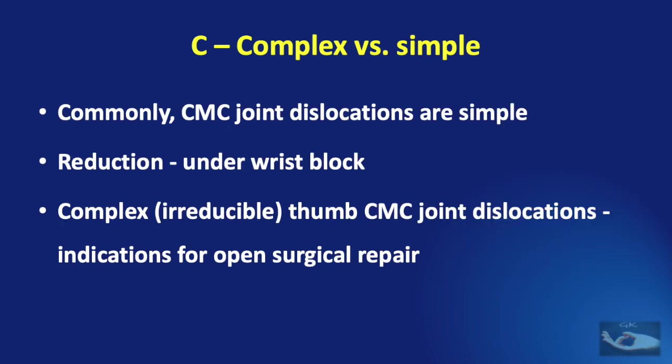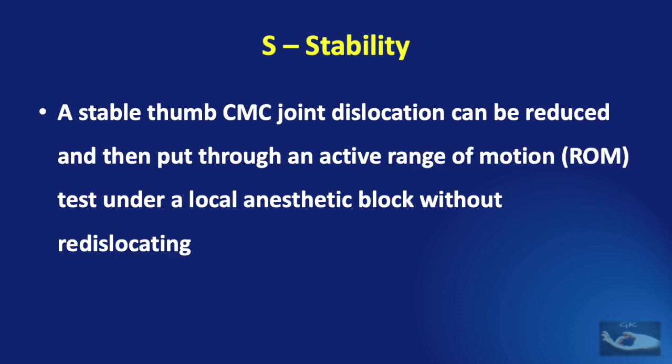Carpometacarpal joint dislocations of the thumb are commonly simple, and reduction can be done under wrist block. Complex or irreducible thumb carpometacarpal joint dislocations are indications for open surgical management. A stable dislocation can be reduced and then put through an active range-of-motion test under local anesthetic block without re-dislocating.